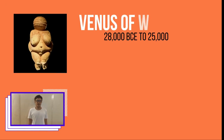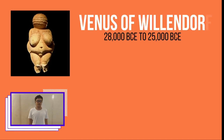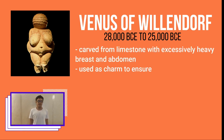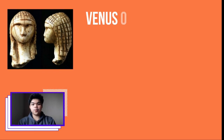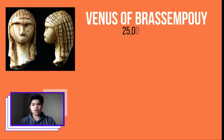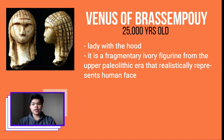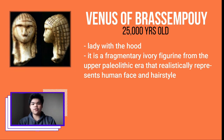This is the Venus of Willendorf. Its estimated date is 28,000 BCE to 25,000 BCE. It is carved from limestone with excessively heavy breasts and abdomen, used as a charm to ensure fertility. Another example is the Venus of Brassempouy, about 25,000 years old. It is a sculpture of a lady with a hood — a fragmentary ivory figurine from the upper Paleolithic era representing hairstyle and the human face.